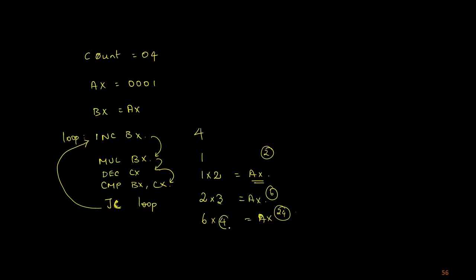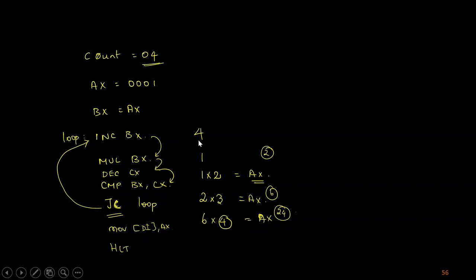When CX value reaches 04, the count is complete and the loop exits, jumping to the next memory location. AX holds the final result. I can write a MOV destination-index, AX instruction. One more logic: instead of compare and jump-carry, I can check jump-no-zero — both are equivalent and produce the same result.